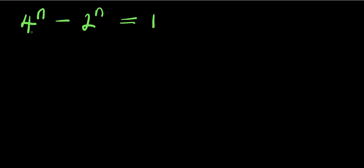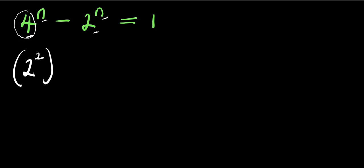Hello. We are going to solve this exponential problem: 4 to the power of n minus 2 to the power of n equals 1. We are solving for all values of n that satisfy this equation. Now, 4 is a perfect square, which is 2 to the power of 2, so we can rewrite it as 2 squared raised to the power of n, minus 2 to the power of n, equals 1.